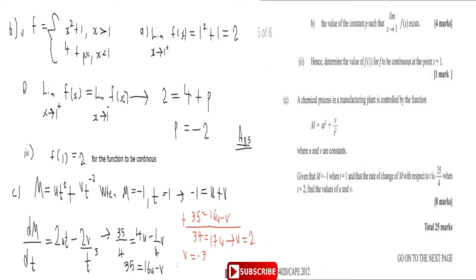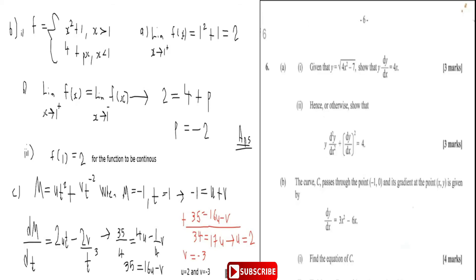So the answer is u = 2 and v = -3. That takes care of question five. Now let's look at question six, which is on differentiation.